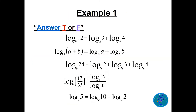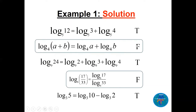Now let's start with a simple true-or-false example. I have five questions. The important one is number two: we have log base 4 of (a + b). Can we write log base 4 of a plus log base 4 of b? That's wrong, because there is no property for addition in the argument. If we have multiplication yes, division yes, but not addition. This one is false. Also false: log base 6 of 17 over 33 cannot become log base 6 of 17 divided by log base 6 of 33 — division in the argument gives subtraction. So we get: true, false, true, false, true.